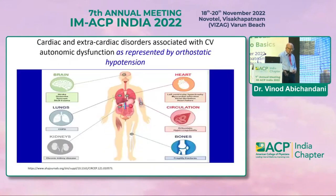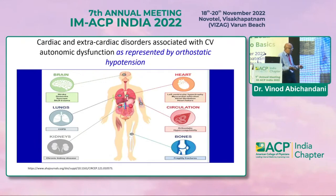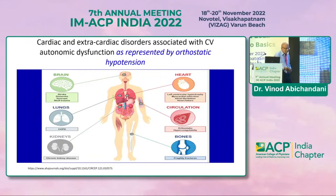Besides cardiac issues, there are certain extra-cardiac disorders associated with cardiovascular autonomic dysfunction as represented by orthostatic hypotension. These include strokes, dementia, syncope, skull trauma, COPD, CKD, orthostatic hypercoagulability, and fragility fractures.